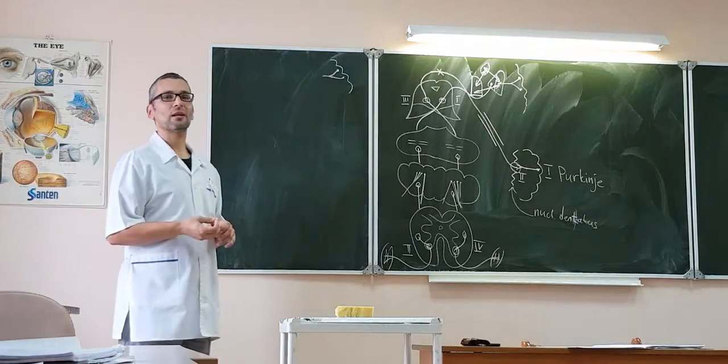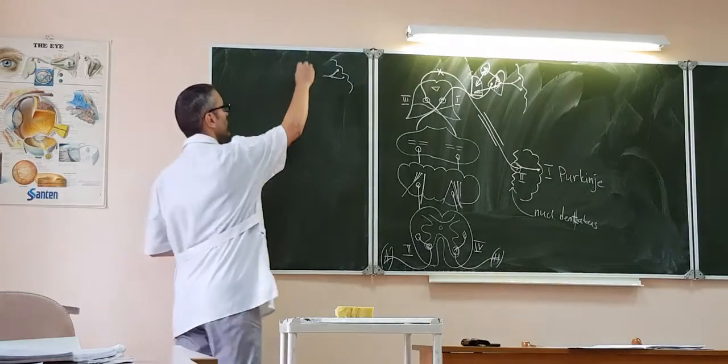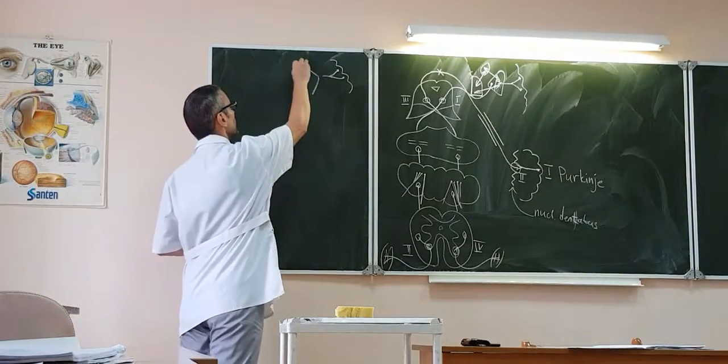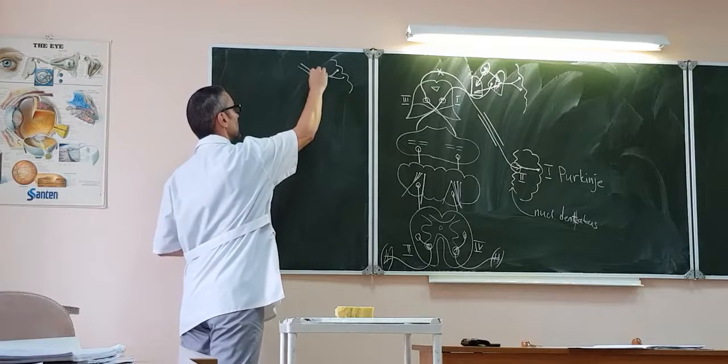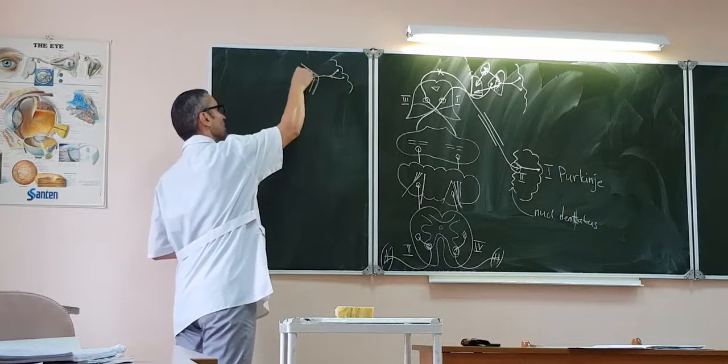The tract must pass through the capsula interna. Tractus cortico nuclearis goes through the genu of capsula interna, this part, and it passes like that.